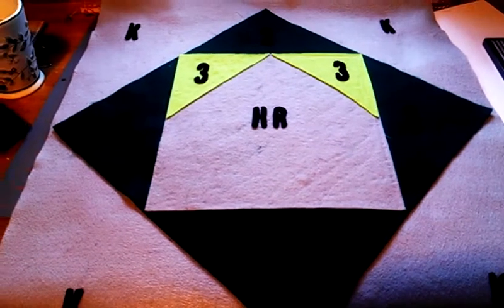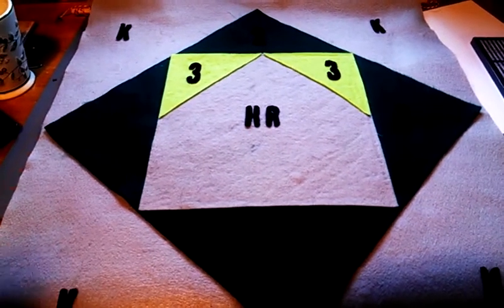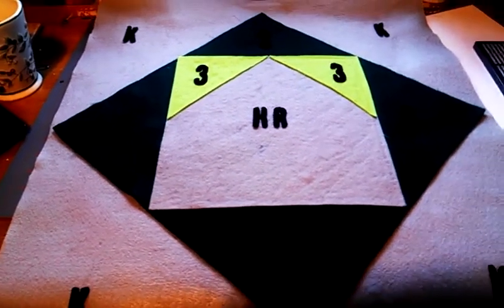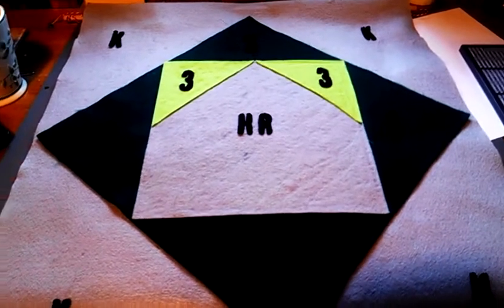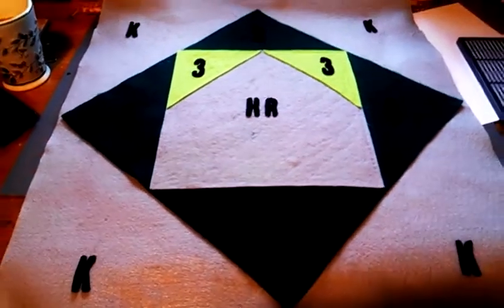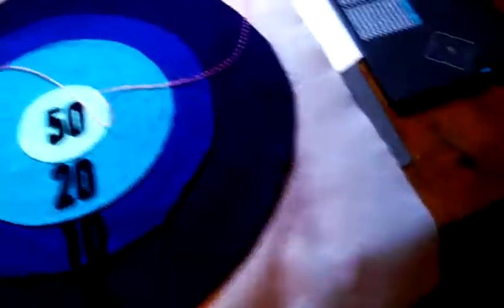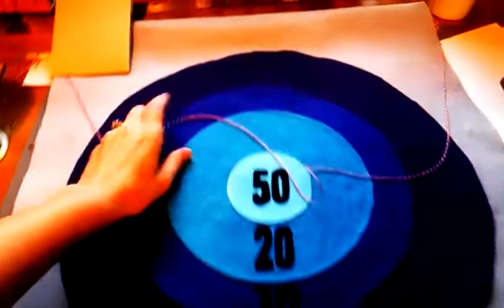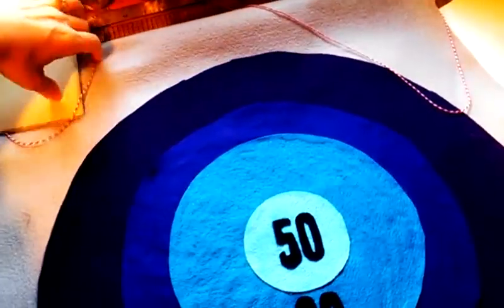They just throw wiffle balls that are covered in Velcro here and they accumulate points depending on where they put it. This side is played obviously like baseball and the other side is just a bullseye. Okay, flip that over, and it's a pretty good size.